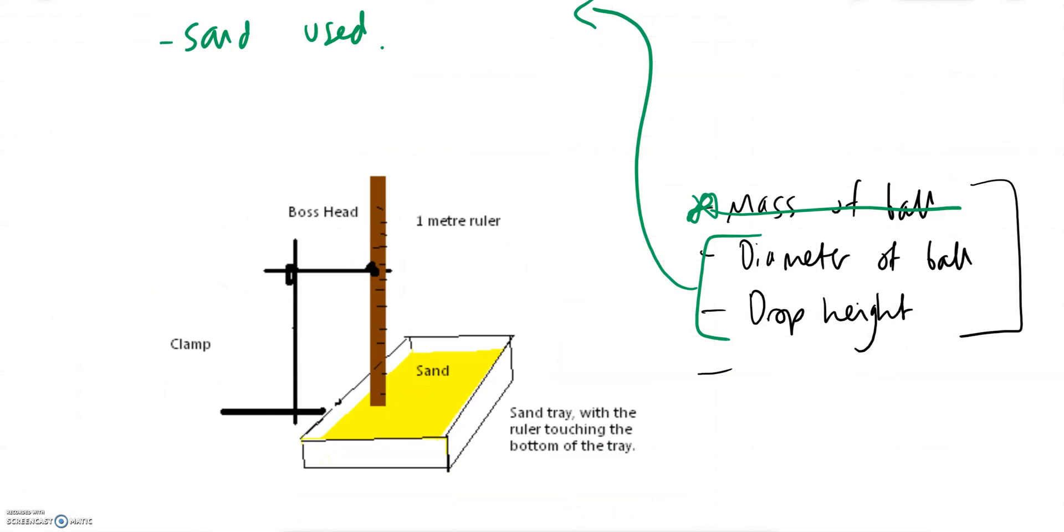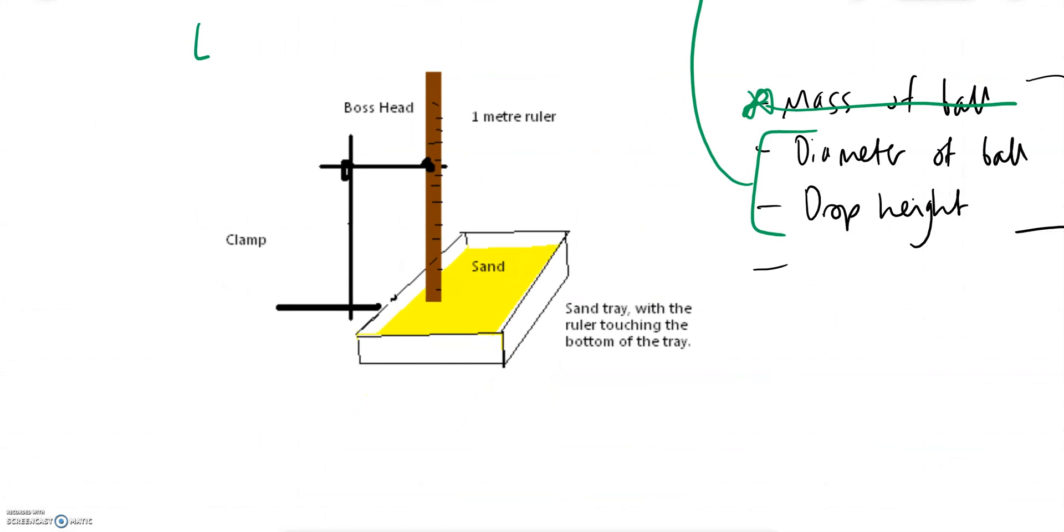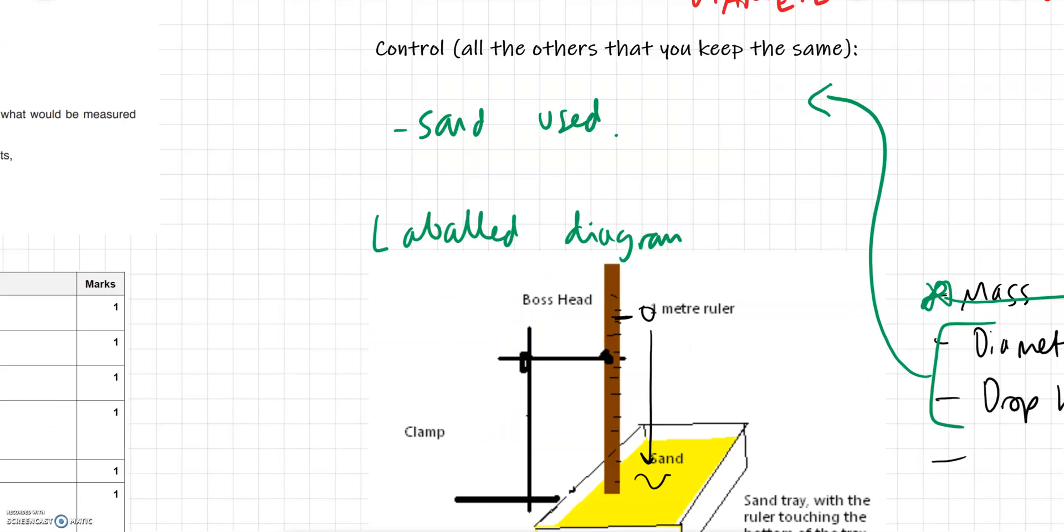After that, even if it doesn't ask for it, it's always worth drawing a labeled diagram. If it doesn't ask for it, I'd wait and see if you've got time to do it, but if it does ask for it, make sure you've drawn it and you've labeled it because it makes it really clear what you're going to be doing. In our case we're going to be dropping it from the same height every time, it's going to hit the sand, make a little hole which we'll then measure.